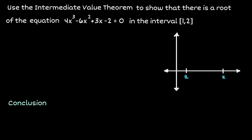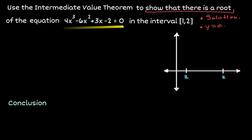Let's understand what we are looking for. We want to show that there is a root of this function. A root is another way of saying a solution. And when it comes to locations, solutions will always be on the x-axis, or whenever the y value is equivalent to 0. So we would like to look at this polynomial and see if the value of y equals 0 falls between the interval from 1 to 2.